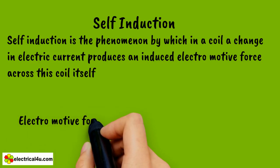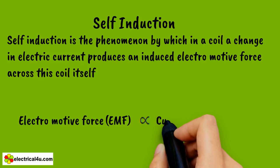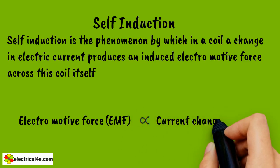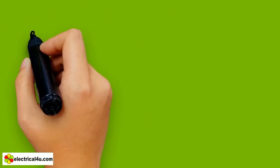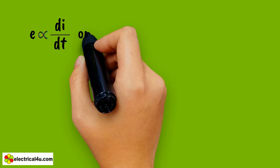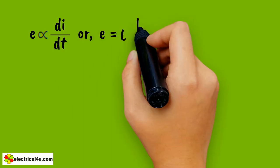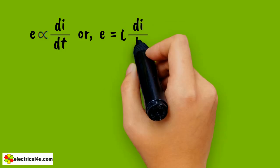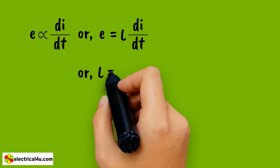This induced electromotive force across this coil is proportional to the current changing rate. The higher the rate of change in current, the higher the value of EMF. We can write that E proportional to di/dt, or E equals L di/dt, or L equals E divided by di/dt.